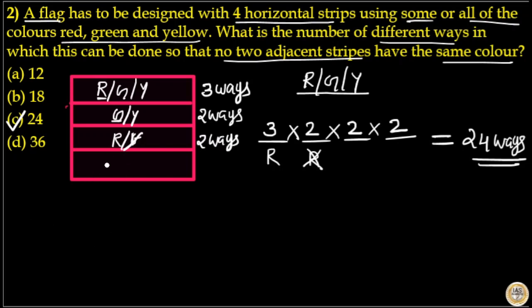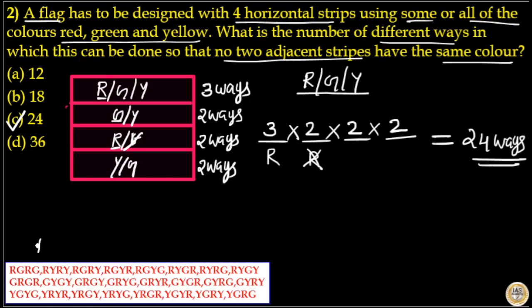If you choose red in the third stripe, you can only choose yellow or green in the fourth stripe, so you can fill the fourth stripe in two ways. Therefore, the total number of ways is 3 × 2 × 2 × 2, which is 24 ways. These are all the possibilities.